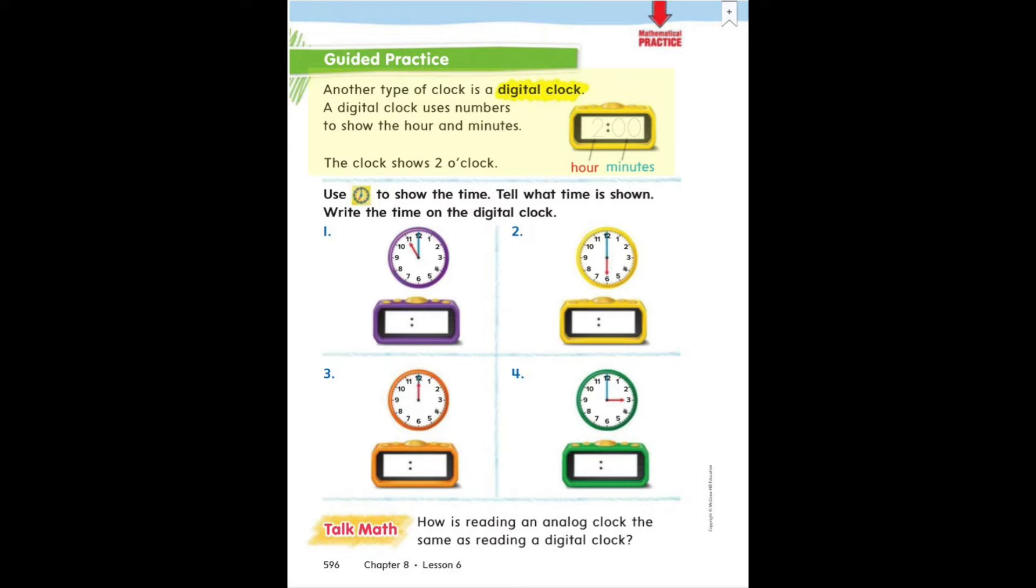The clock shows two o'clock. So you can trace over that two o'clock on the clock on the right and you see that the hour is just the two and the minutes we show using a zero zero. Whenever the minute hand is pointing straight up at the twelve, you show that on a digital clock with a zero zero.